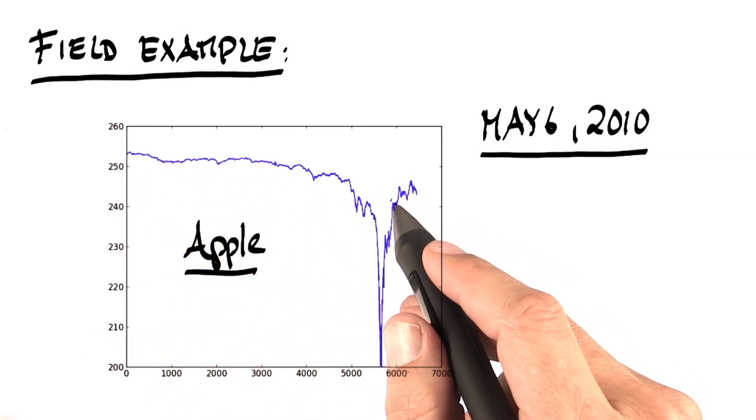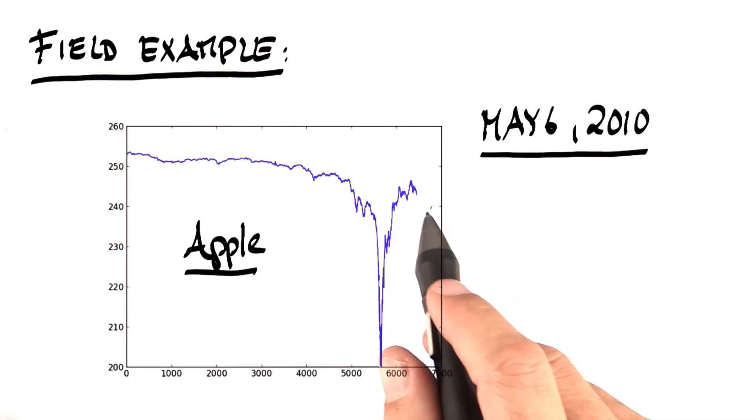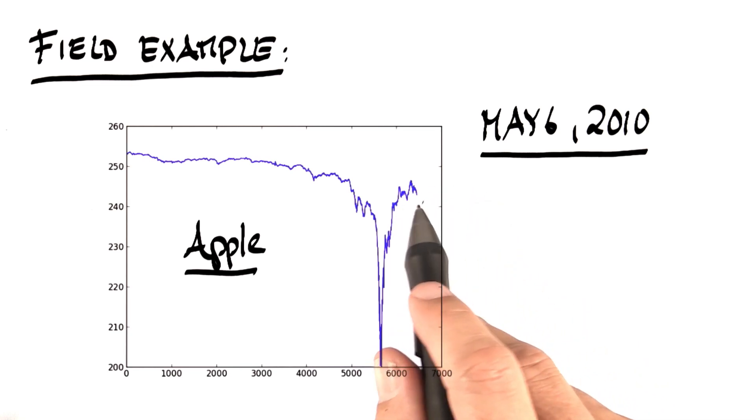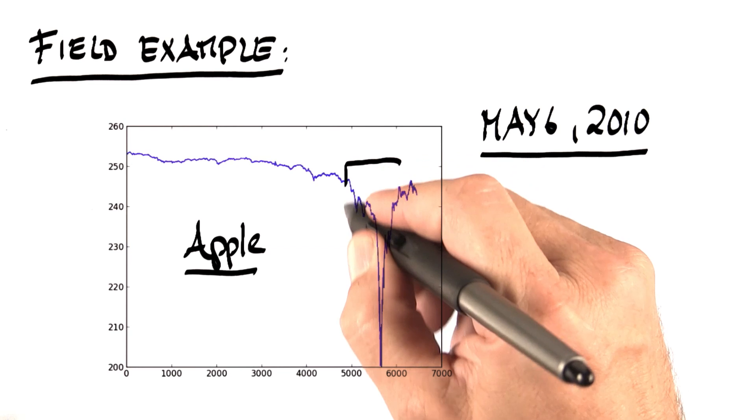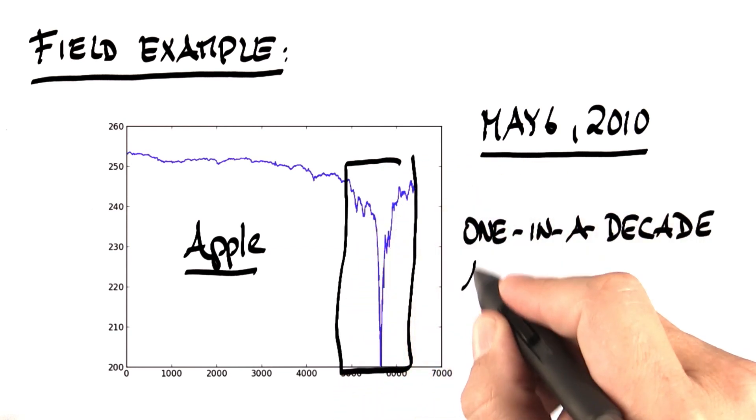Back to the original price. As a statistician, we are concerned about this because if you make trading decisions based on what's happening, we might lose millions or billions of dollars. This is a one in a decade abnormal behavior.